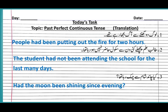The first sentence is 'Log do ghante se aag bujha rahe the' — translation: 'People had been putting out the fire for two hours.' Number two: 'Talib-e-ilm pichle kai din se school haazir nahi ho raha tha' — translation: 'The student had not been attending the school for the last many days.' Number three: 'Kya chand sham se chamak raha tha' — translation: 'Had the moon been shining since evening?'